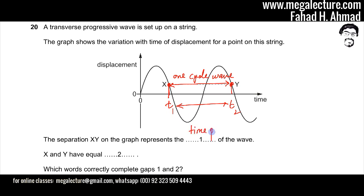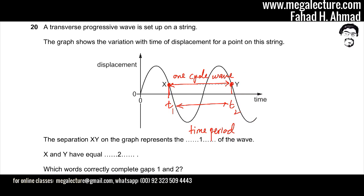The time period is the time needed for one wave to pass. This is exactly one wave, and the distance between them on this axis is basically the time it takes — so it's going to be the time period.